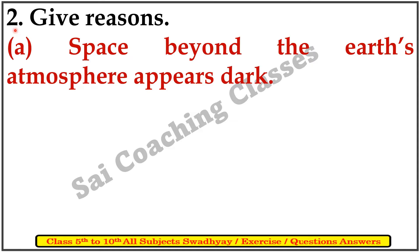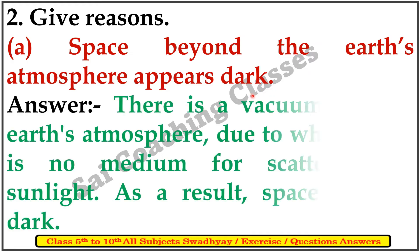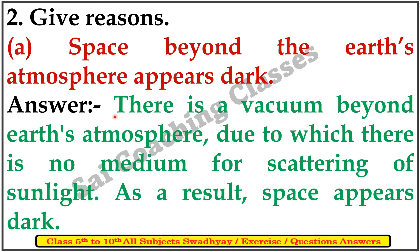Second question: Give reasons. A. Space behind the earth's atmosphere appears dark. Answer: There is vacuum behind the earth's atmosphere, due to which there is no medium for scattering of sunlight. As a result, space appears dark.